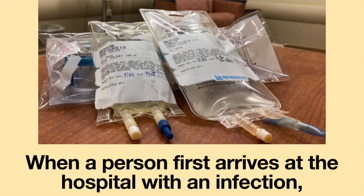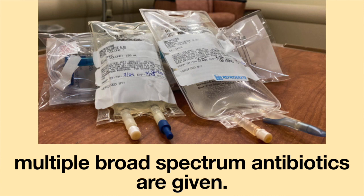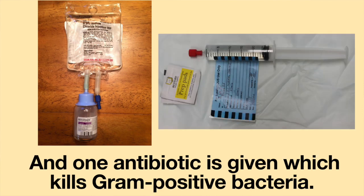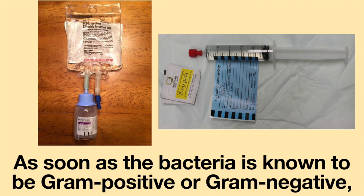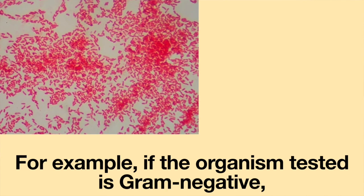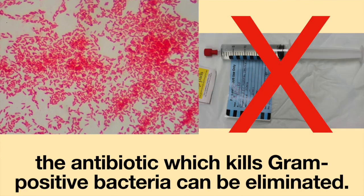When a person first arrives at the hospital with an infection, multiple broad-spectrum antibiotics are given. Usually, one antibiotic is given which kills gram negative bacteria and one antibiotic is given which kills gram positive bacteria. As soon as the bacteria is known to be gram positive or gram negative, the antibiotics can be de-escalated. For example, if the organism tested is gram negative, the antibiotic which kills gram positive bacteria can be eliminated.